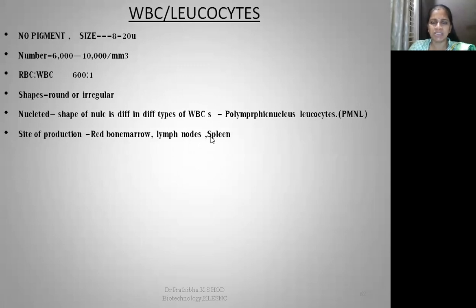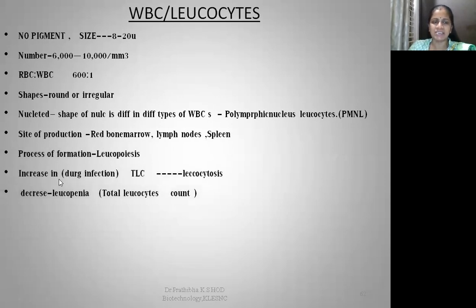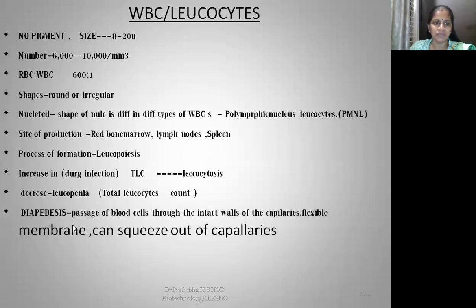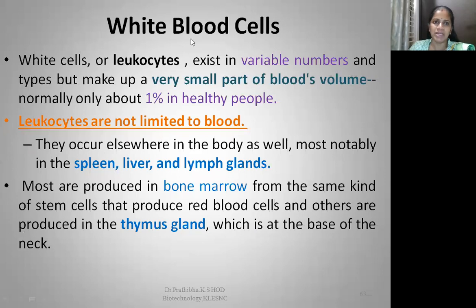The site of WBC production is red bone marrow, lymph nodes, and spleen. The process of formation of leukocytes is known as leukopoiesis. An increase in WBCs during infection or allergies is called leukocytosis, while a decrease in leukocytes is known as leukopenia. WBCs also play an important role in diapedesis — squeezing out of the capillaries through flexible membranes to fight against infection, passing through the intact walls of the capillaries.